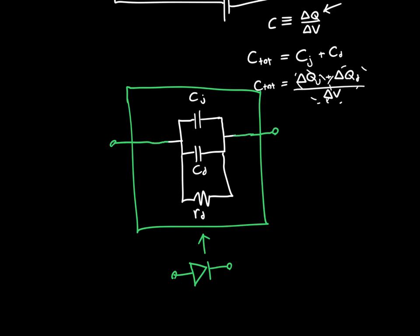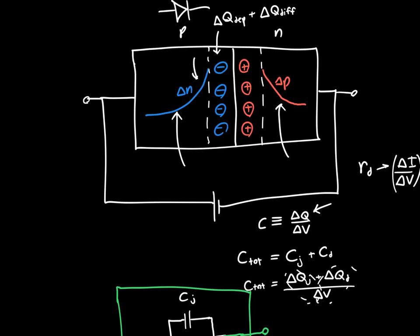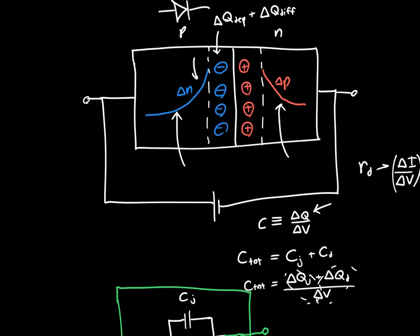And so this linear model is an approximation of the diode. Now we are missing one thing, and that's sometimes important and sometimes not. And that's that the diode is physically connected to the outside world, and it's connected via wires.